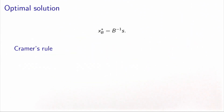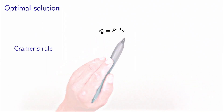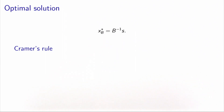Let's now look at the optimal solution of the problem. We know that because it's a linear optimization problem, it can be solved using the simplex algorithm. At the end, we will find an optimal basis, and the optimal solution will be x*_B = B⁻¹s, where B is the index of the basic variables and the non-basic variables are equal to zero.